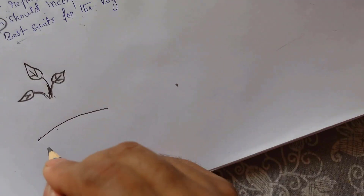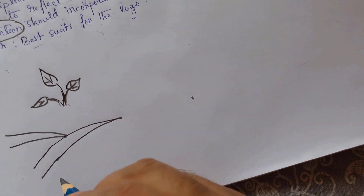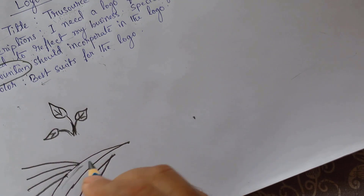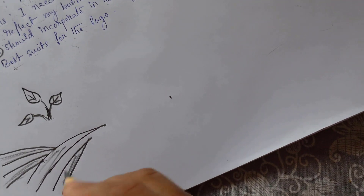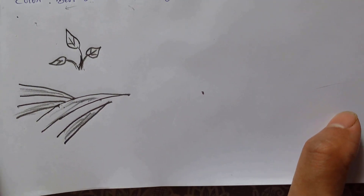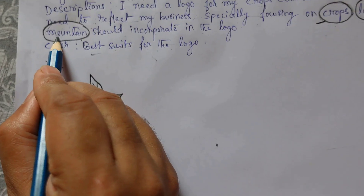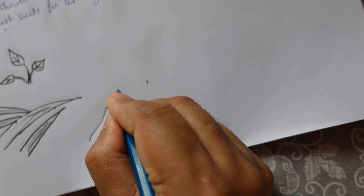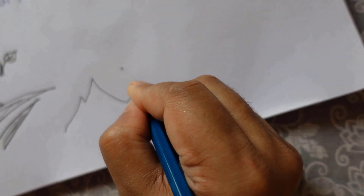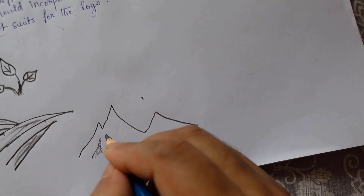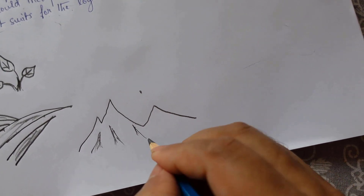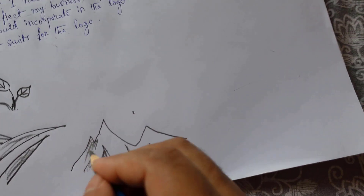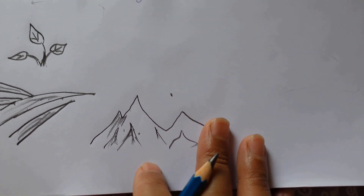These are the basic sample shapes of crops. Next is the landscape — I'll make a rough sketch of the landscape. And here I'll draw a mountain shape. So these are the mountain shapes. Simply you need to draw these initial things and now we'll start developing the logo.